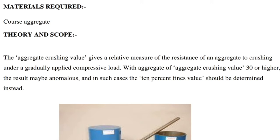Materials required: coarse aggregate. Theory and scope: The aggregate crossing value gives a relative measure of the resistance of an aggregate to crossing under a gradually applied compressive load. With aggregate of aggregate crossing value 30 or higher, the result may be anomalous, and in such cases the 10% fines value should be determined instead.